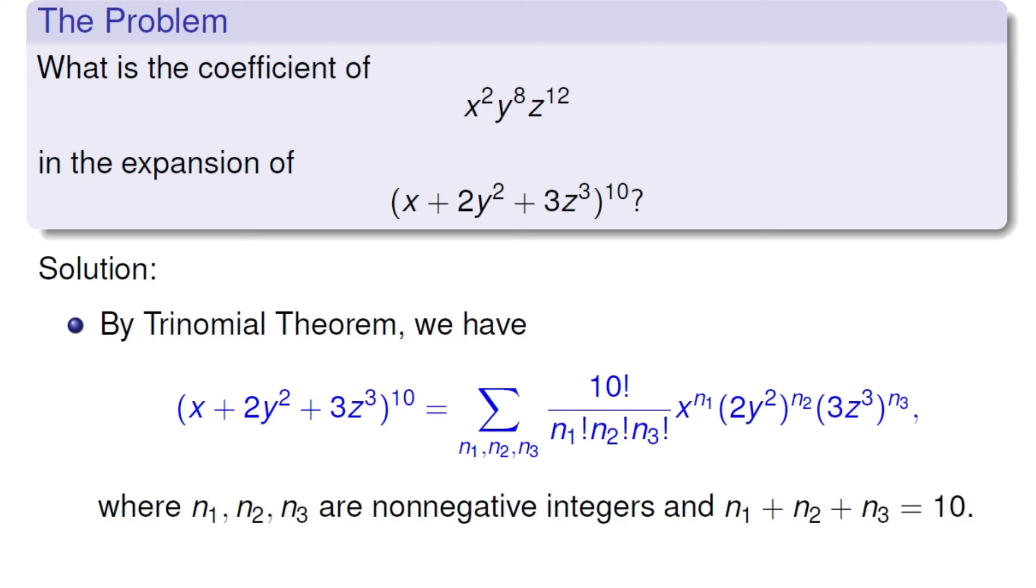By the trinomial theorem, we have this raised to power 10 is going to be the summation given here. Here is 10 factorial over n1 factorial, n2 factorial, n3 factorial times x to the power n1. Now, second is 2y squared as one term raised to power n2, and 3z cubed raised to power n3.